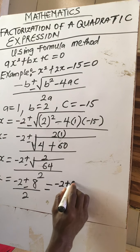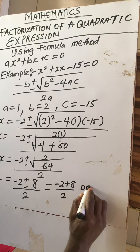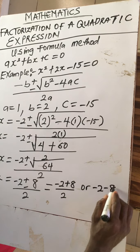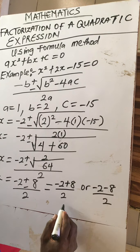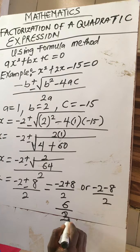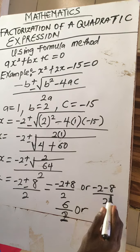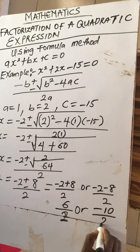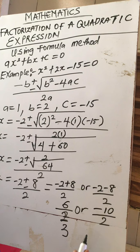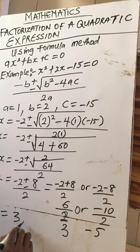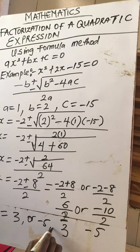For the plus: minus two plus eight equals six, over two gives us three. For the minus: minus two minus eight equals minus ten, over two gives us minus five. So x equals three or x equals minus five. Thank you for watching.